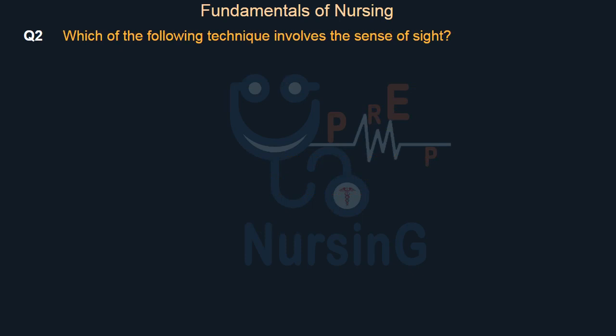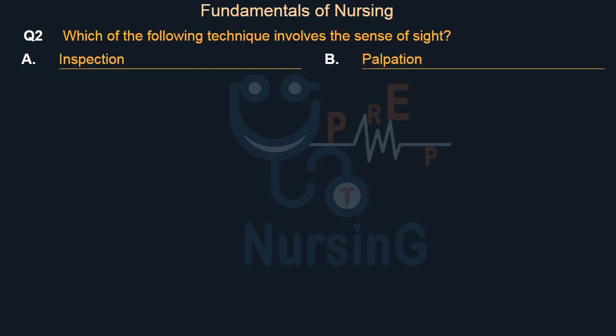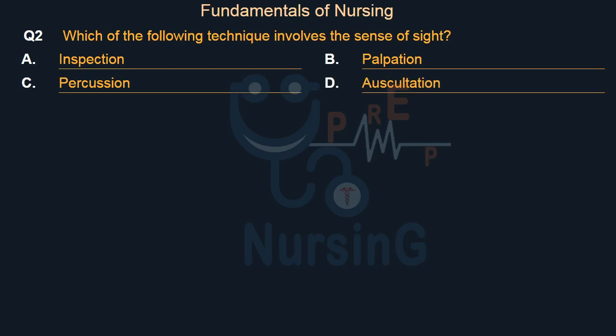Which of the following technique involves the sense of sight? Option A — Inspection. Option B — Palpation. Option C — Percussion. Option D — Auscultation. Right answer is Option A: Inspection.